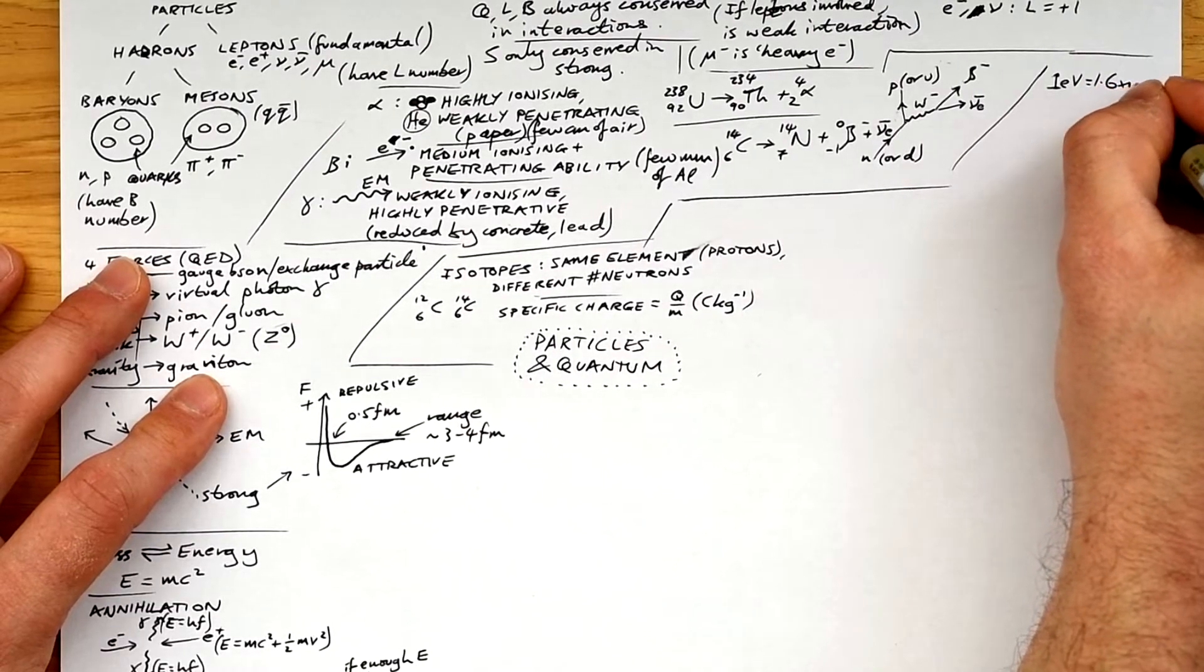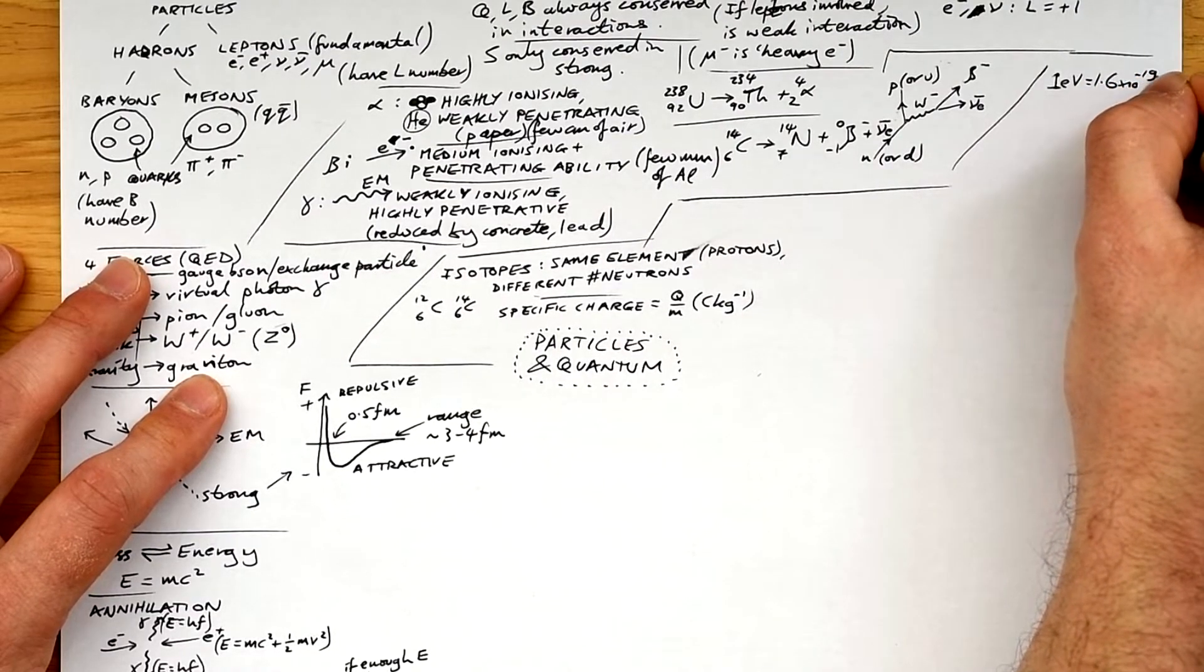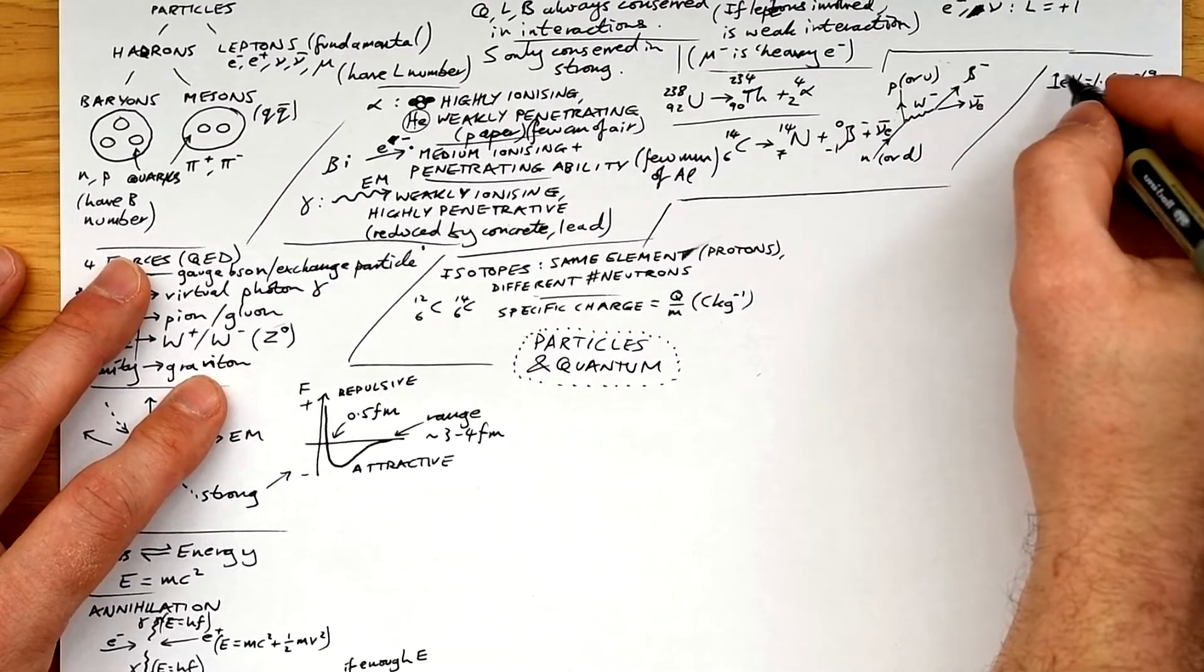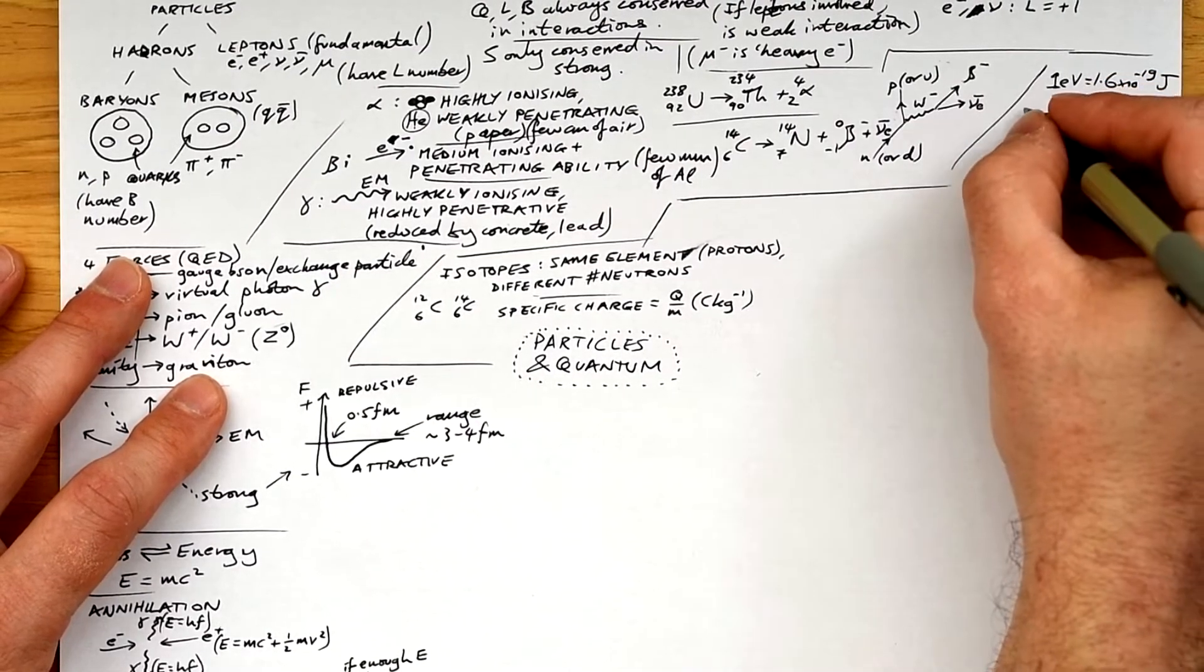Worth remembering that one electron volt is the same number as the charge of an electron, because one electron volt is the energy in joules that an electron has when accelerated through a PD of one volt.